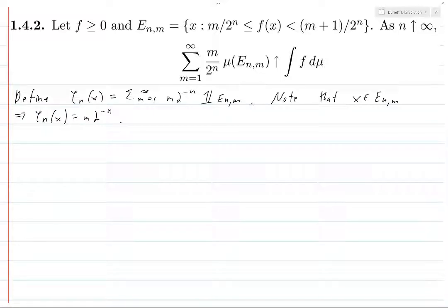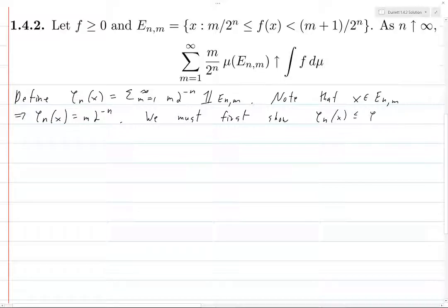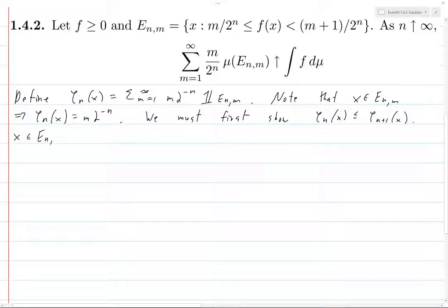We're going to prove a few things about these φₙ's. We must first show that φₙ(x) is always less than or equal to φₙ₊₁(x). I proved this fact for very similar functions in a previous exercise and glossed over the proof — I'm going to prove it in detail here. Suppose x is in Eₙ,ₘ; then m times 2 to the minus n is less than or equal to f(x), which is less than or equal to (m+1) times 2 to the minus n.